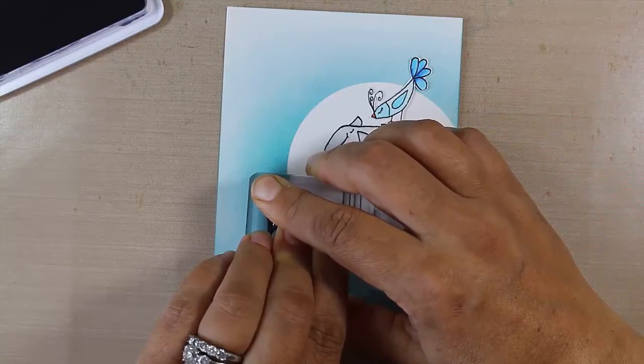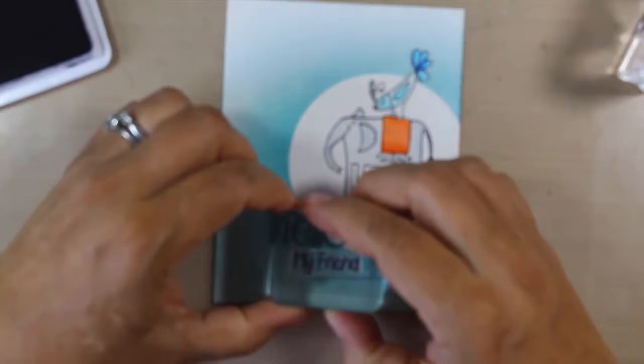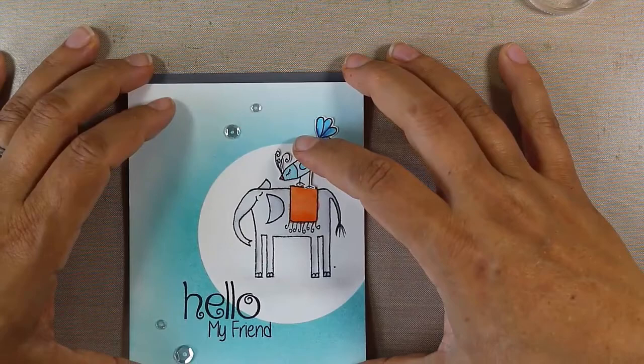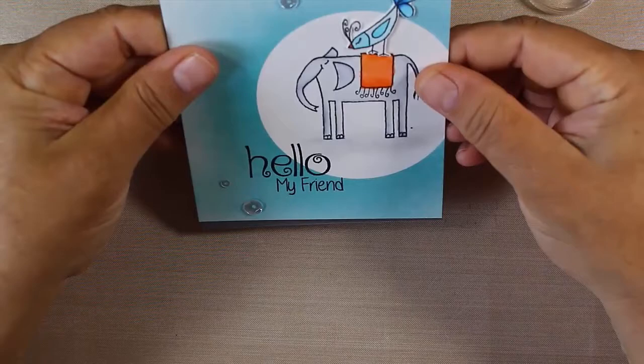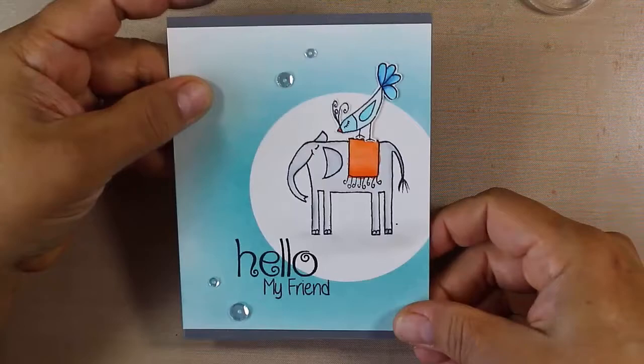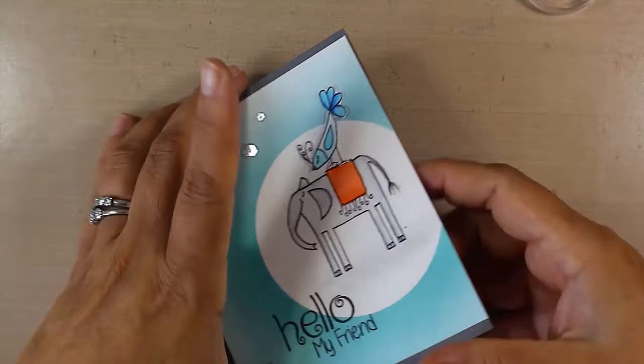Being that this is watercolor paper, I always usually attach it with glue. I decided to mat it actually onto a dark gray base here, and that way I can have a little bit peeking out top and bottom. Then I added a few sparkling clear sequins by Pretty Pink Posh.